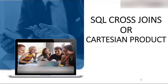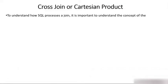Today the topic of discussion is SQL cross-join or Cartesian product — both are the same thing. To understand how SQL processes a join, it is important to understand the concept of Cartesian product. If you want to understand how SQL processes a join, it is important to understand Cartesian product. You can say that Cartesian product or cross-join is a prerequisite of join.